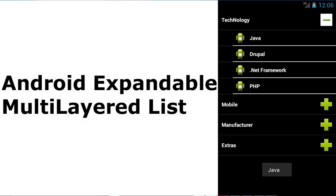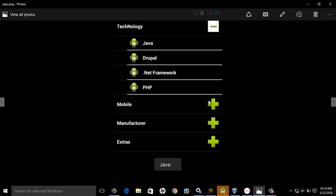Hello everyone, welcome to Delaware Studios. This is another episode of Android programming and we'll be looking at multi-layer expandable lists - how to create expandable lists whereby you can collapse and expand a list in a list view format. We have a multi-group list view right inside the view.